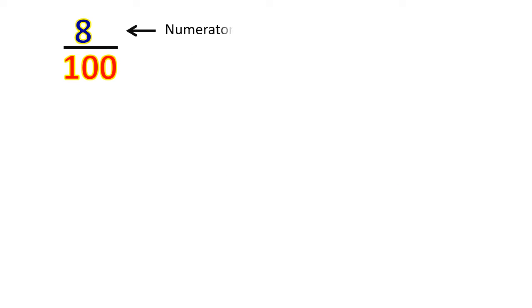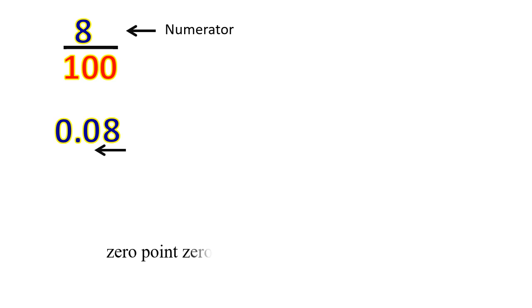See one more example: 8 upon 100. So 8 is the numerator. In the denominator there are two zeros, but here only a single digit is present. That means there is no tenth digit present. So what are you going to write? You are going to write zero in that place. After two digits, you are going to put the decimal. The answer is 0.08.